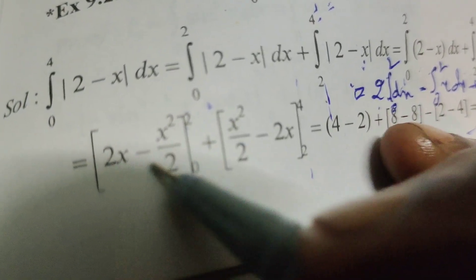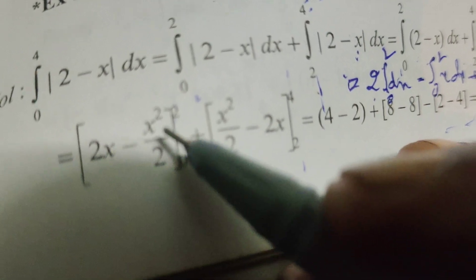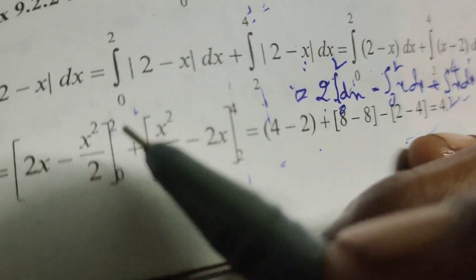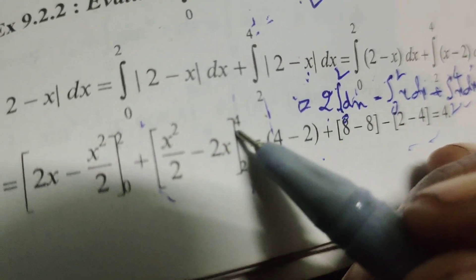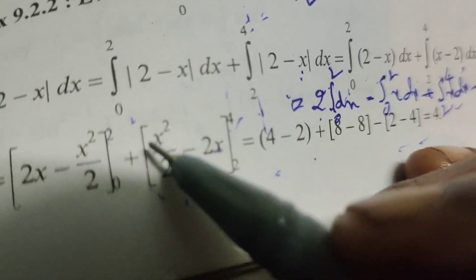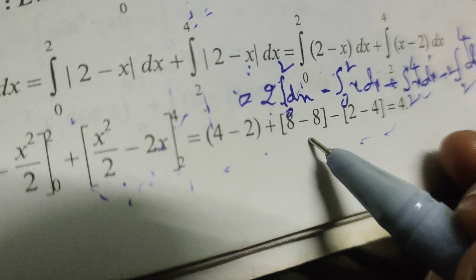Substituting the limits: for the first bracket, (4 - 2) - 0. For the second bracket at x=4: 16/2 - 8, which equals 8 - 8 = 0.